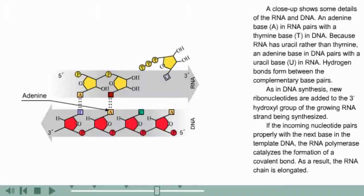an adenine base in DNA pairs with a uracil base (U) in RNA. Hydrogen bonds form between the complementary base pairs. As in DNA synthesis, new ribonucleotides are added to the 3' hydroxyl group of the growing